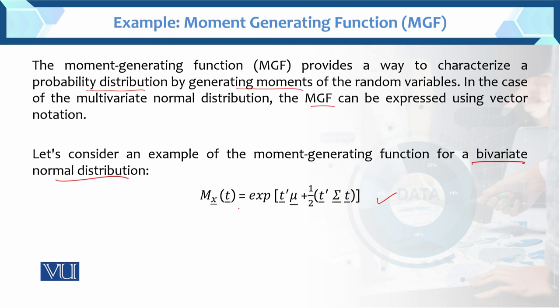This is the moment generating function. It is of the form exponential of t'μ — this is the mean — plus 1/2, giving us the function: the moment generating function is exp(t'μ + ½t'Σt).